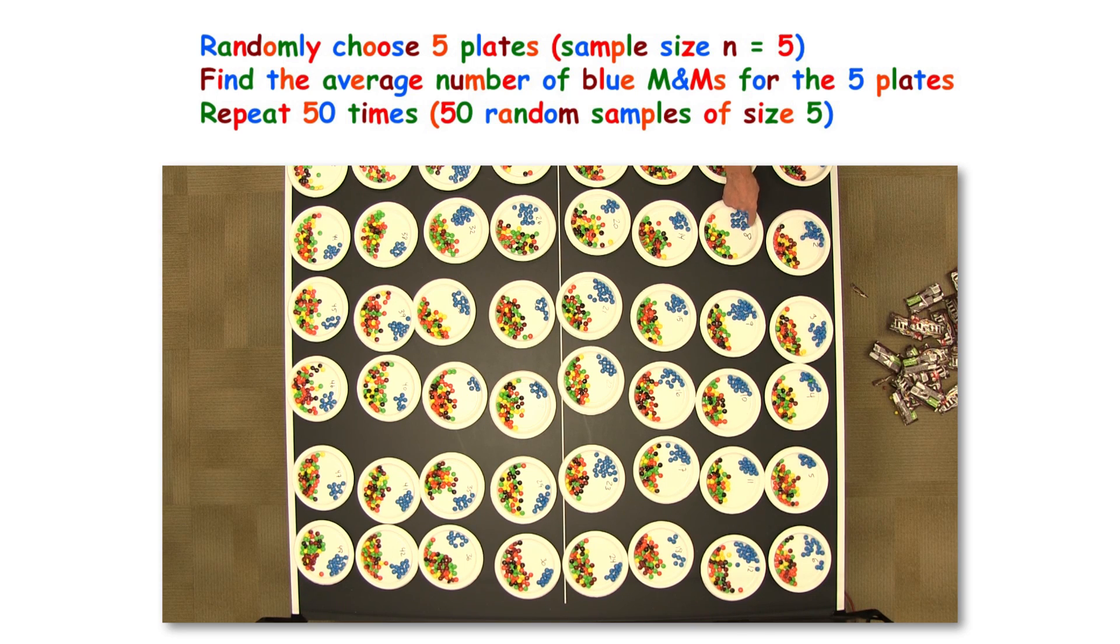Once we've done that, we're going to do that 50 times, taking 50 random samples, each with N equals 5 plates. Then we're going to construct a histogram. That histogram will be the distribution of sample means.